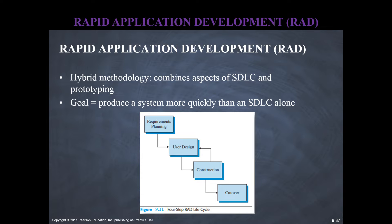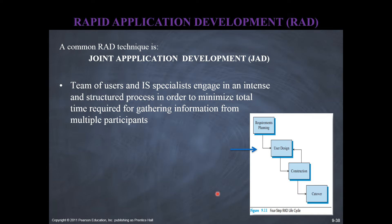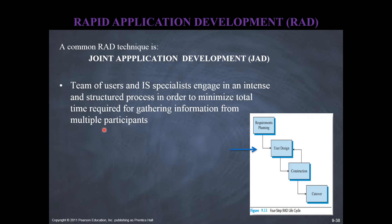One of the defining features or techniques used as part of rapid application development is joint application development or JAD. JAD is like a methodology for teamwork. Basically, there is a certain set of procedures, approaches, techniques, and documents for teams of users — meaning business users and IS specialists — to work together to define requirements. It's a very intense and structured process, and the most important goal is to minimize the total time required for gathering information from multiple participants.